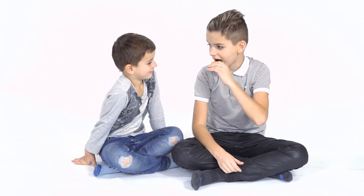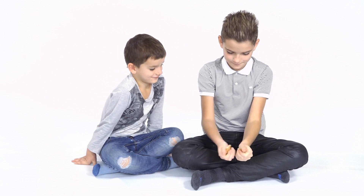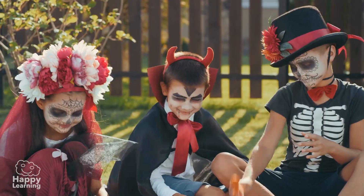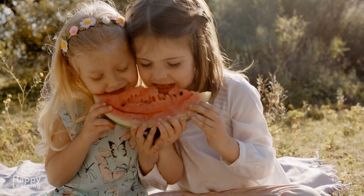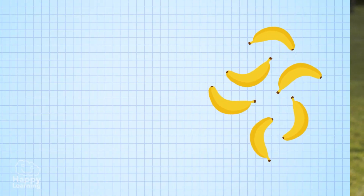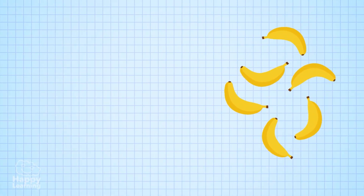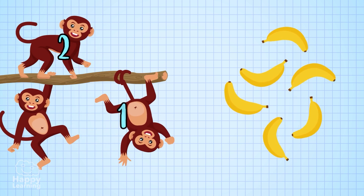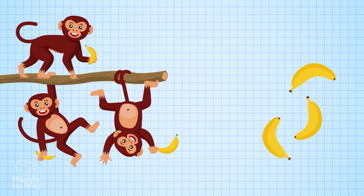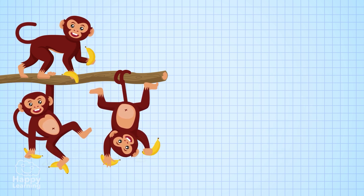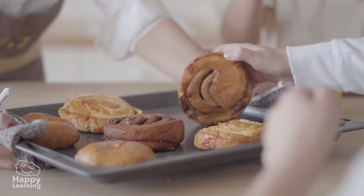Dividing is the most generous mathematical operation because it means sharing. Dividing is taking a quantity of something and sharing it in equal parts. For example, if we have six bananas and we divide them between three monkeys, each monkey gets two bananas.